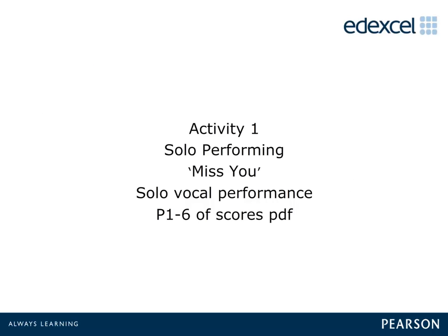Now it is time to listen to the first solo performance. If you have not already done so, pause the video and download the audio files and score PDFs. Listen to the '01 solo voice Miss You' MP3 and compare it to the score on pages 1–6 of the score PDF. Refer to page 29 of the specification to decide on the level of difficulty, then refer to page 16 for the solo performing mark grid. When you have decided on a raw mark, refer to page 15 to scale it according to the level of difficulty. Now pause the video and listen to the audio, and write some notes to remind you of your assessment.